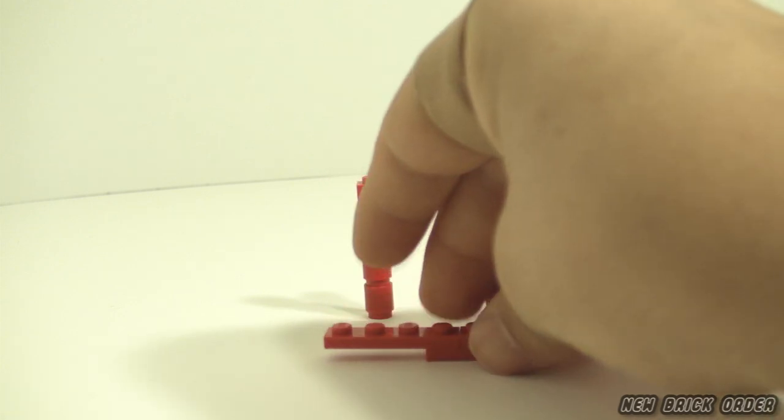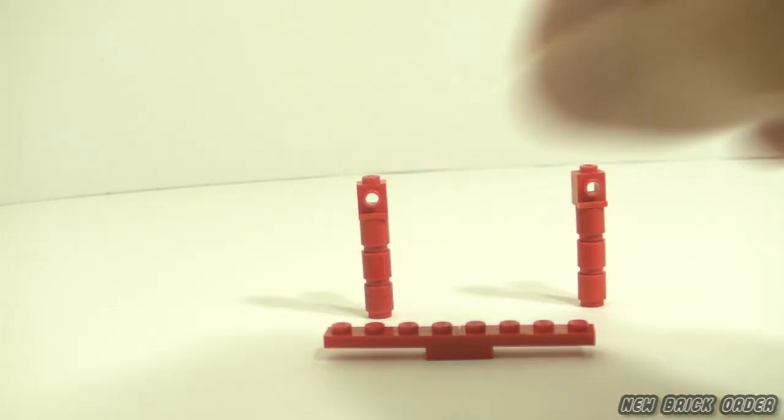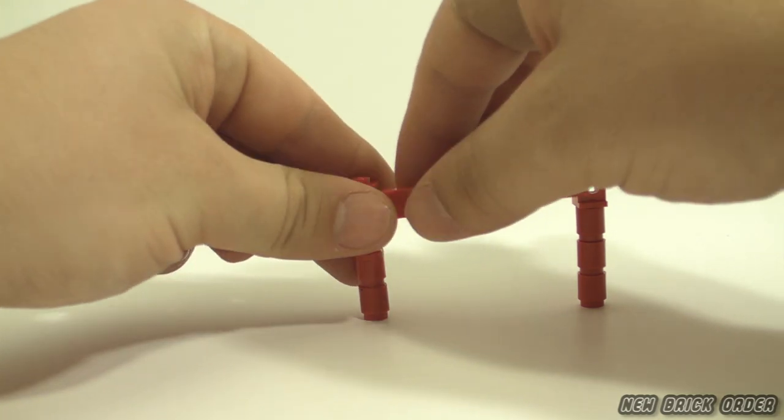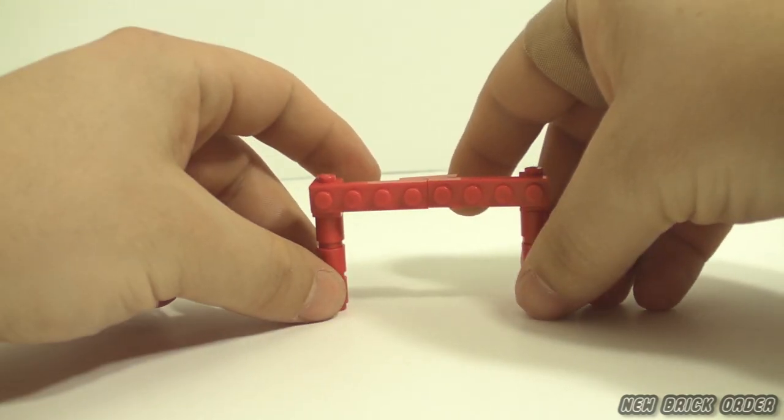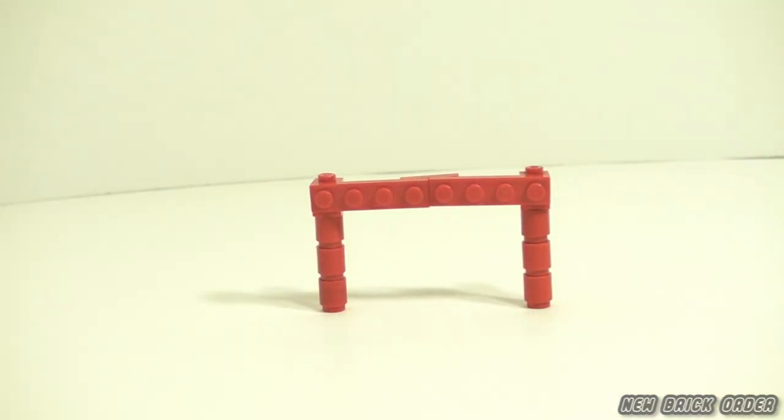I'm showing you this because not all of you will have a lot of 1x1 cylinder pieces, and you don't even need them. You could just use a 1x1 brick if you wanted. But in hockey, the posts are round, so I was going for a more realistic look.